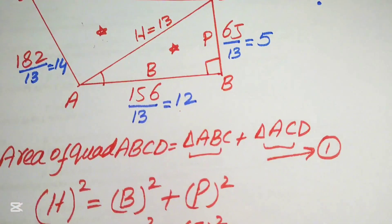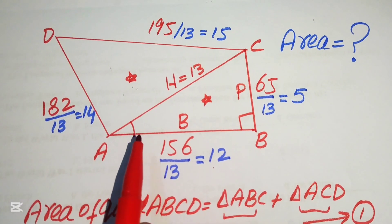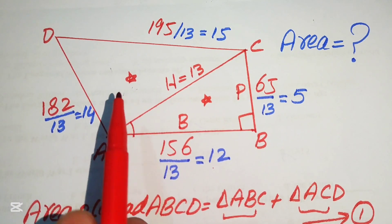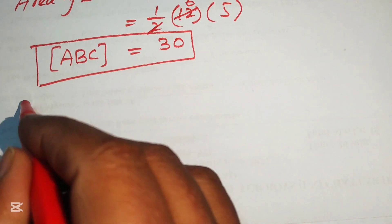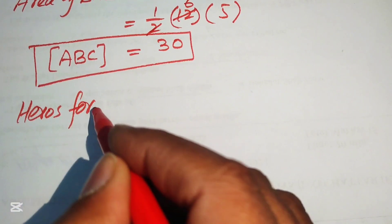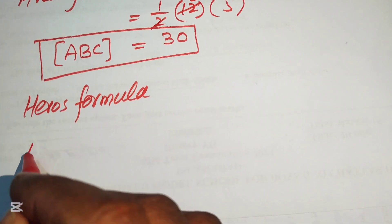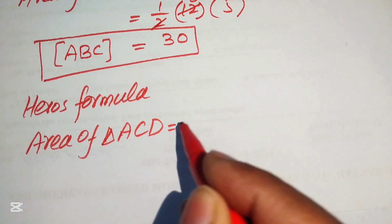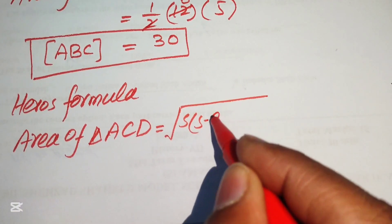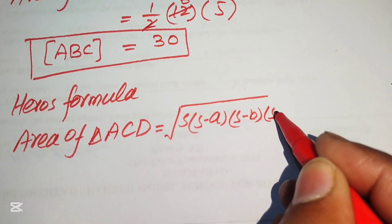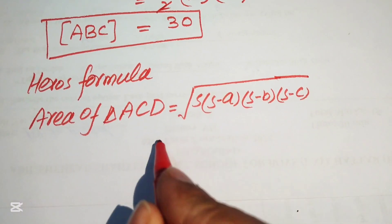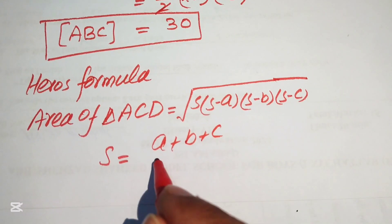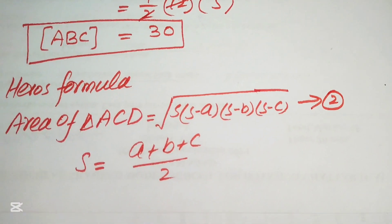We now move to the second triangle, ACD. This triangle is not a right triangle, but we are given all three side lengths, so we use Heron's formula. Heron's formula states: area of triangle ACD = √(s(s−a)(s−b)(s−c)), where s is the semi-perimeter: s = (a + b + c) / 2.